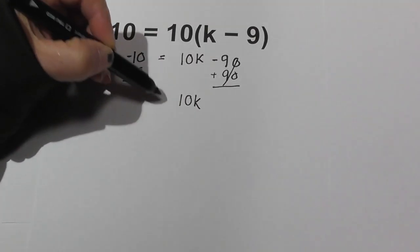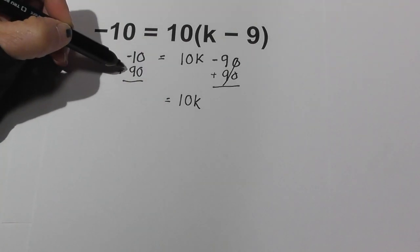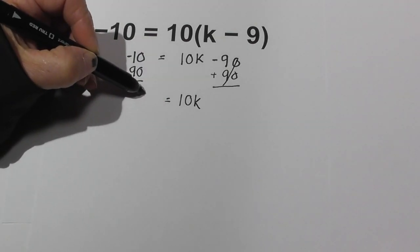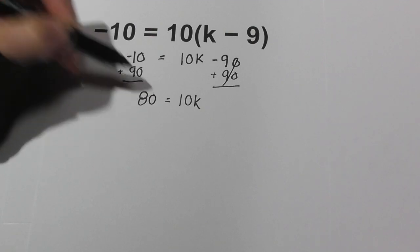This equals... a positive 90 and a negative 10 equals 80.